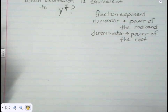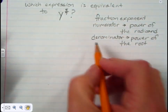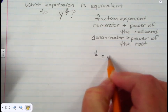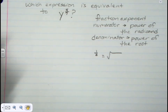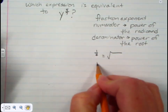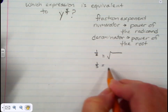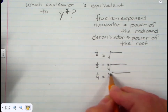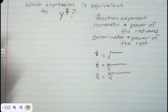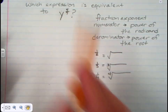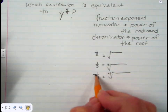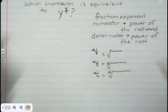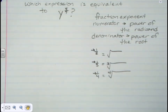By that I mean, if the denominator is a 2, then that's the same as having a square root — we just don't write the 2. When we have one-third, we have a cubed root. One-fourth would be a fourth root. In this particular example, the power in the numerator is not a 1, so it becomes the power of the radicand.